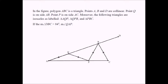In the figure, polygon ABC is a triangle. Points A, B, and D are collinear. Point Q is on side AB, point P is on side AC. Moreover, the following triangles are isosceles: AQP, QPB, and PBC. If the measure of angle DBC is 84 degrees, find the measure of angle QAP.